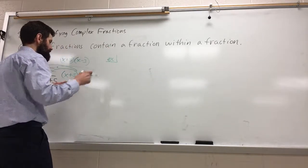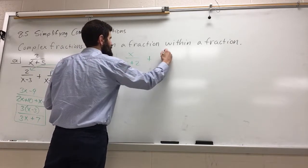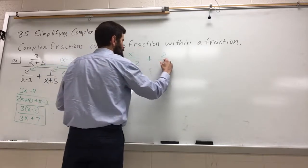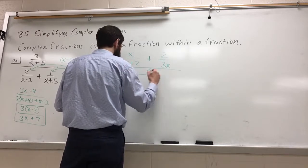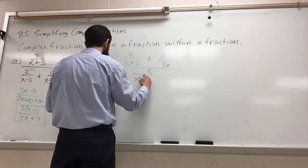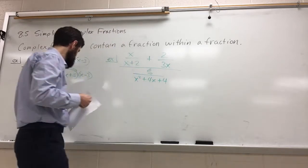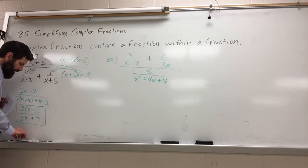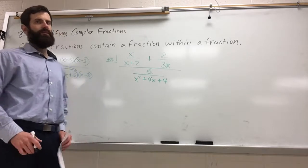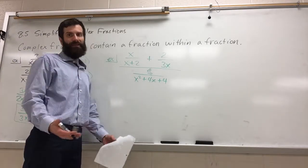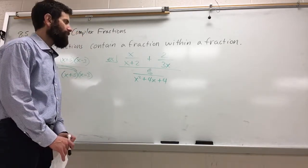Last one here. x over x plus 2 plus 2 over 3x, divided by 5 over x squared plus 4x plus 4. Well class, oftentimes with rational expressions, how things can get complicated or more involved is they'll give you something that needs to be factored first, and that's the case here. x squared plus 4x plus 4.